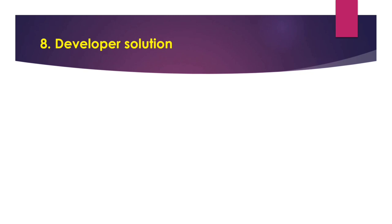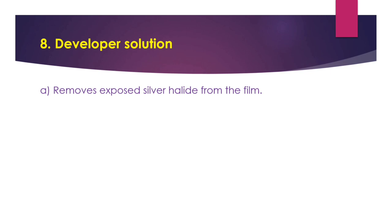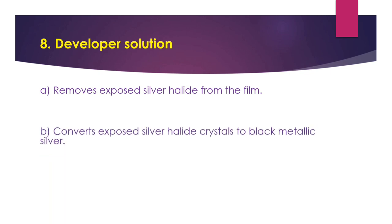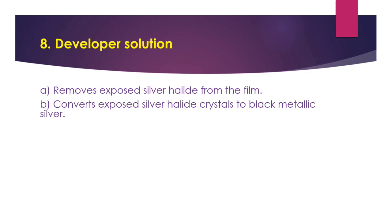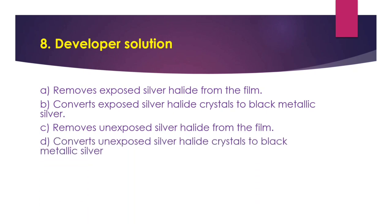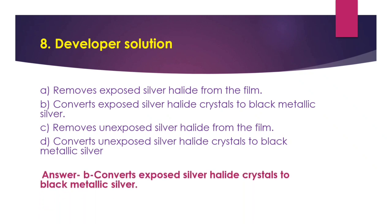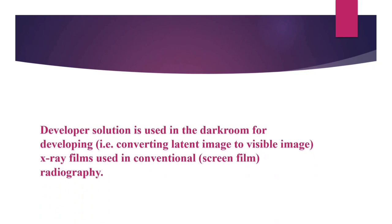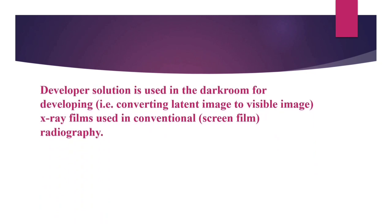Question number 8: Developer solution - Option A - Removes unexposed silver halide from the film. Option B - Converts exposed silver halide crystals to black metallic silver. Option C - Removes unexposed silver halide from the film. Option D - Converts unexposed silver halide crystals to black metallic silver. The answer is Option B - Converts exposed silver halide crystals to black metallic silver.